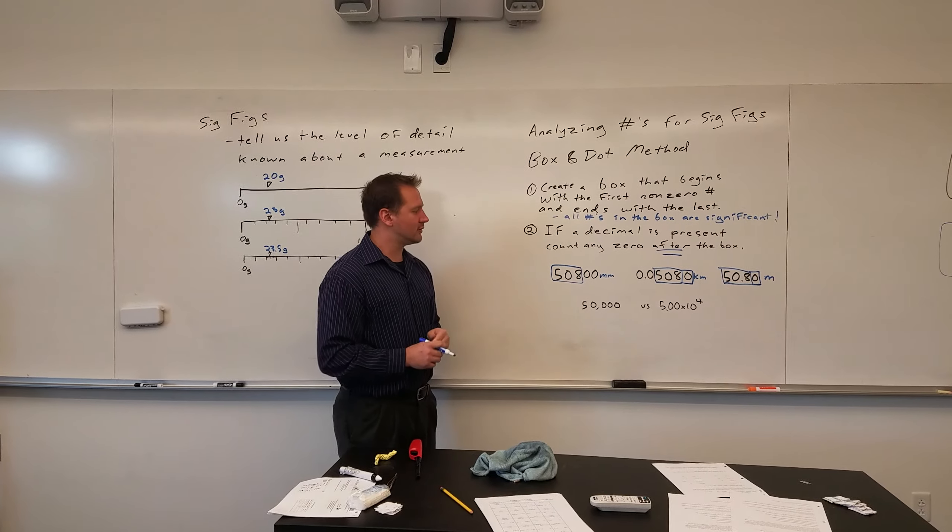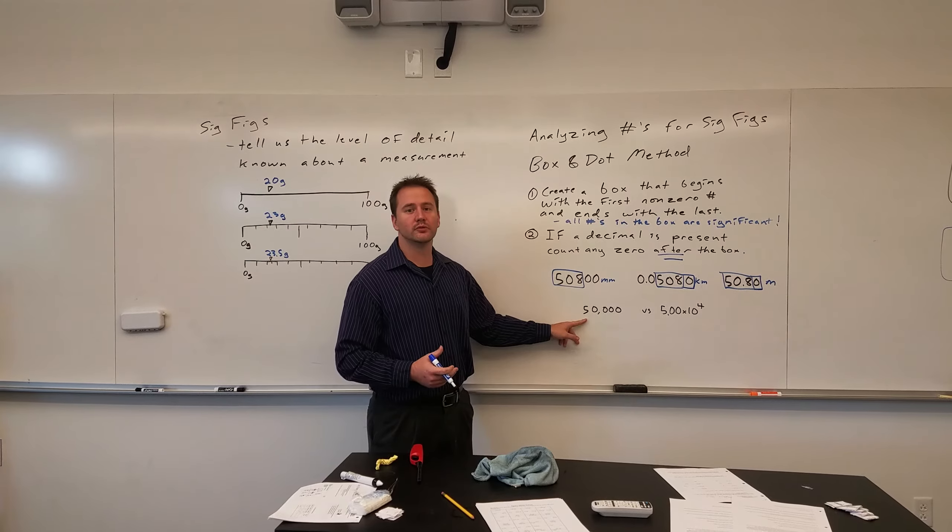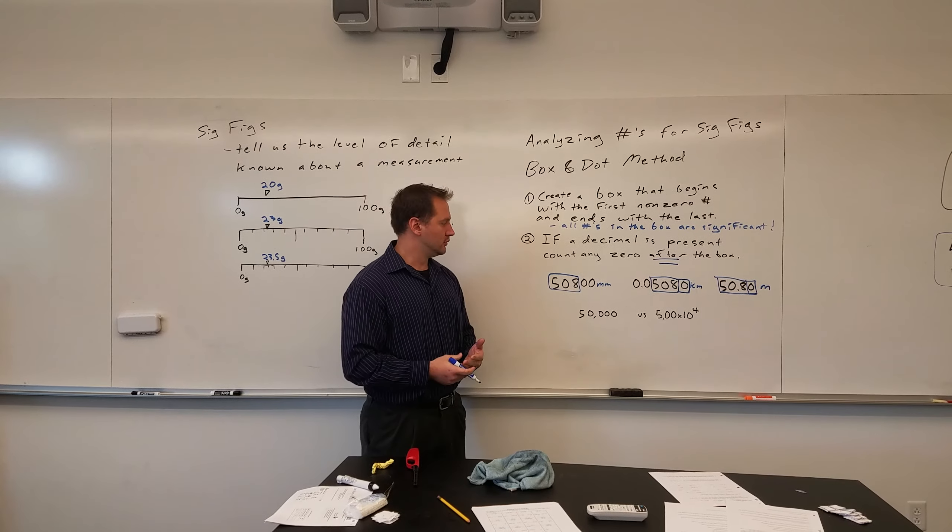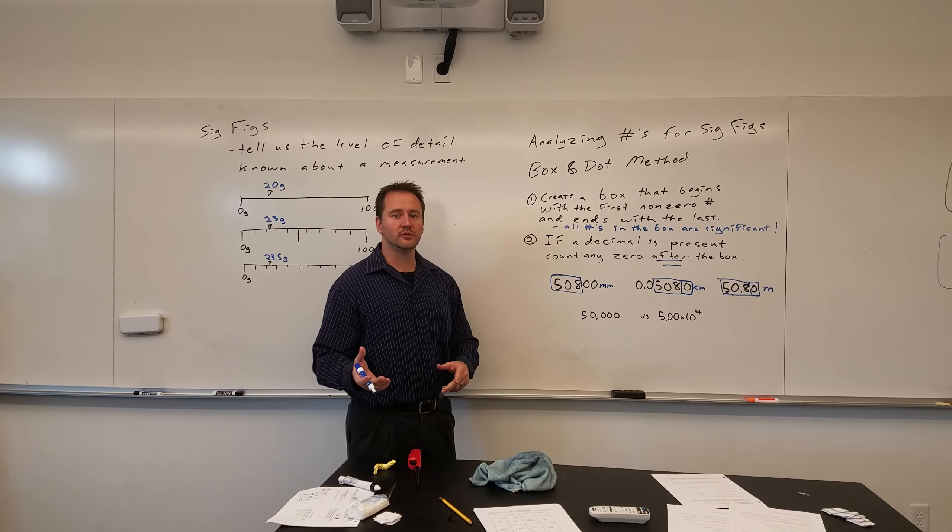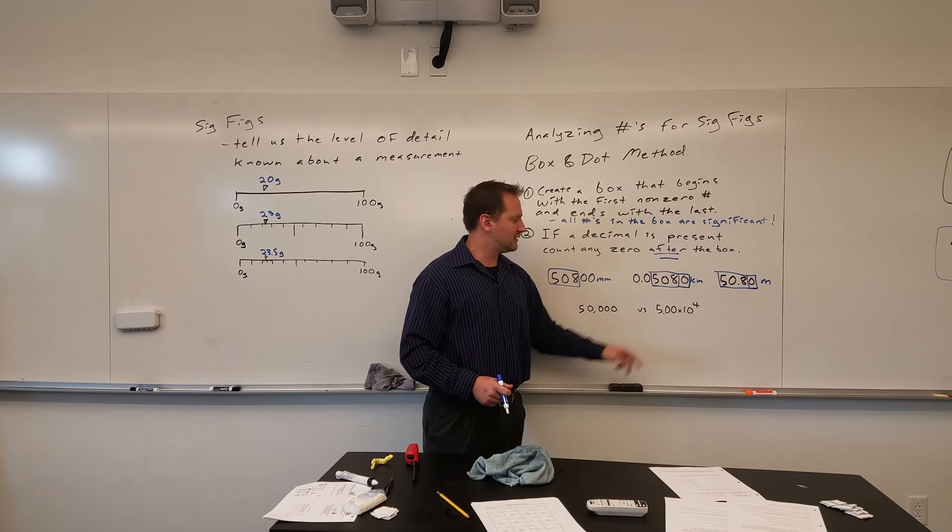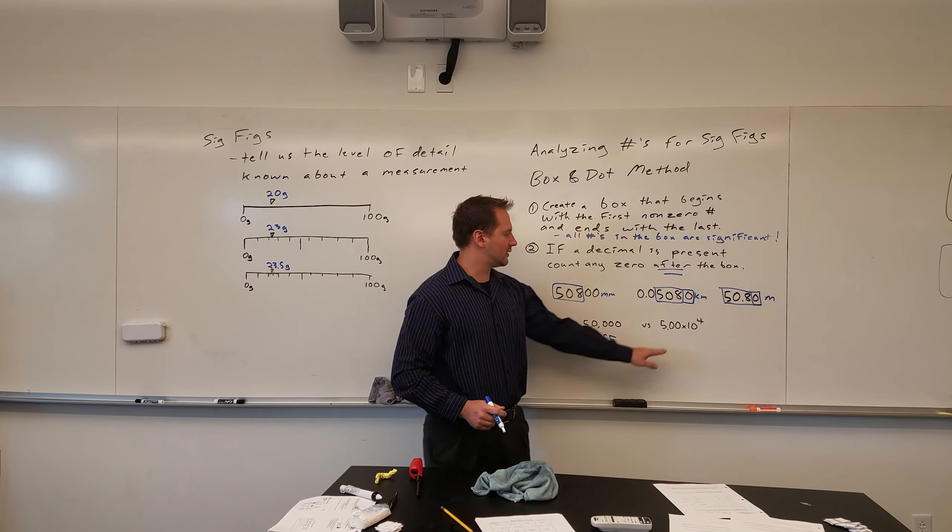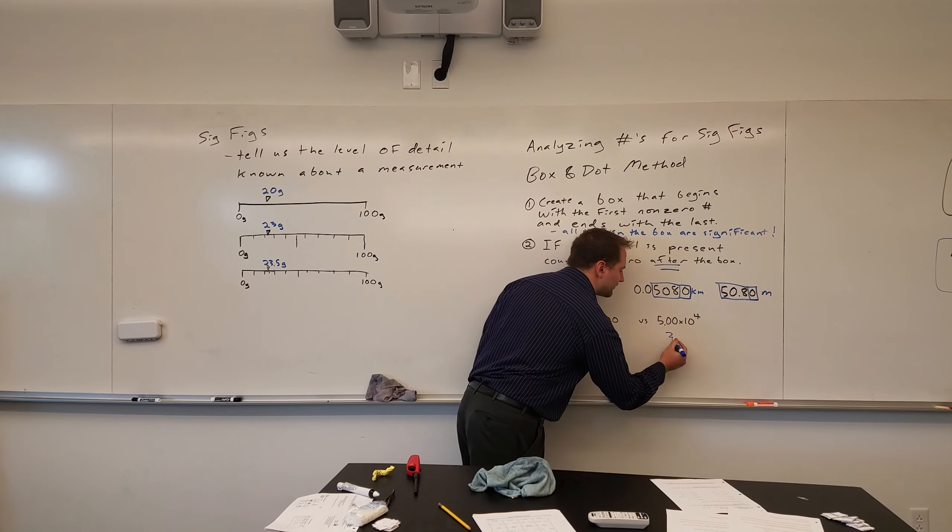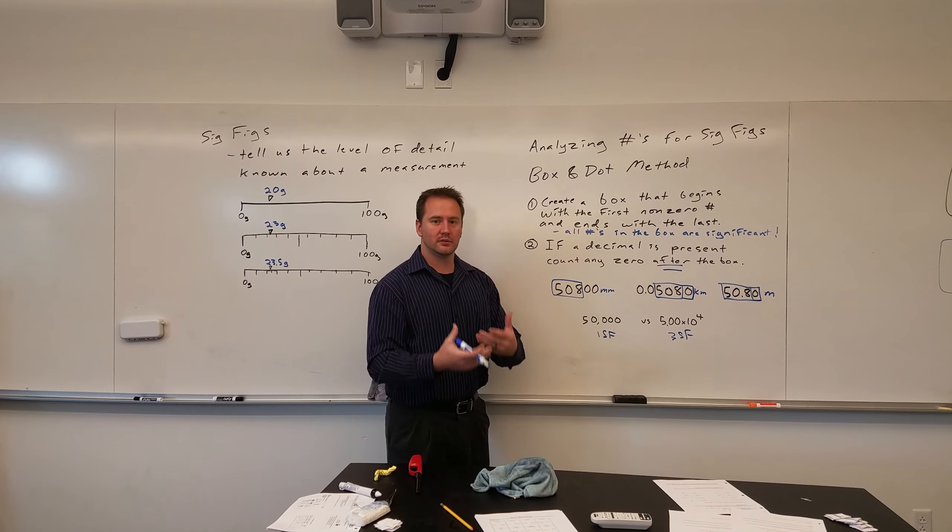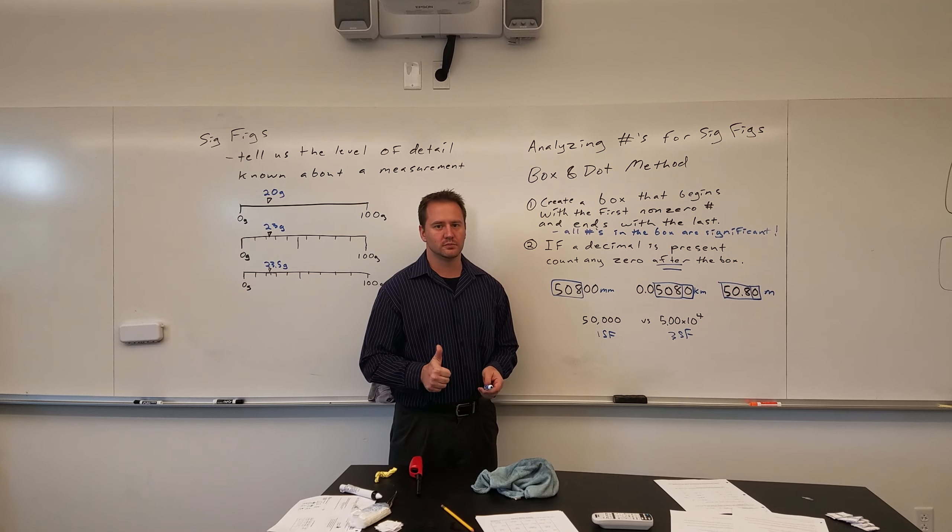And the last thing in this video is if you're given a number like 50,000, you're really only supposed to assume that you have one significant figure, but what if you knew three of them? Well, you can't really present that with this number. So what we do is use scientific notation to indicate that. So 50,000, you would just assume this has one sig fig, but if you have this number in scientific notation written as 5.00 times 10 to the fourth, you would have three significant figures. So if we want to indicate more than one significant figure in a number like that, it's important that we use scientific notation, and that's the important thing here.